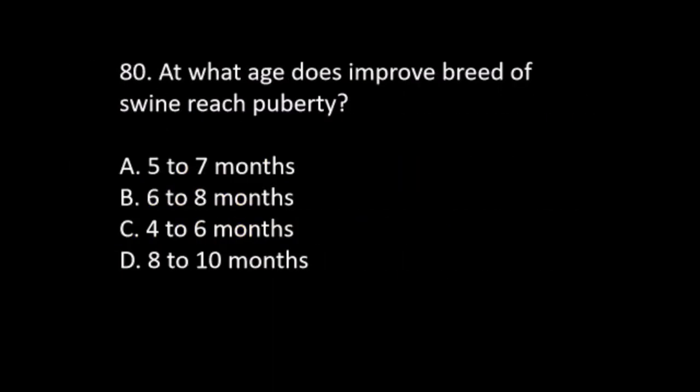Number 80. At what age does an improved breed of swine reach puberty? A. 5–7 months. B. 6–8 months. C. 4–6 months. D. 8–10 months. The answer is B. 6–8 months.